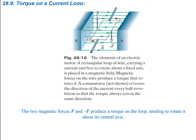The last section covers the torque on a loop of current — a current loop. The elements of an electric motor are shown: a rectangular loop of wire carries a current and is free to rotate about a fixed axis, placed in a magnetic field going from the north pole to the south pole. A commutator reverses the direction of the current every half revolution so that the torque always acts in the same direction, because if the loop flips over, the direction of the torque would reverse.